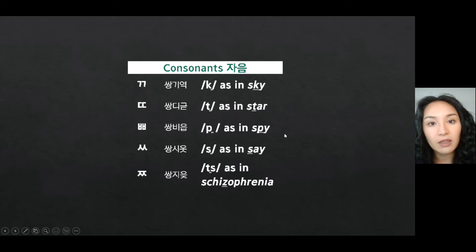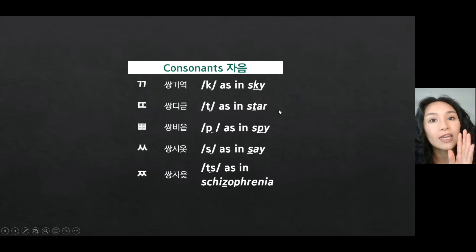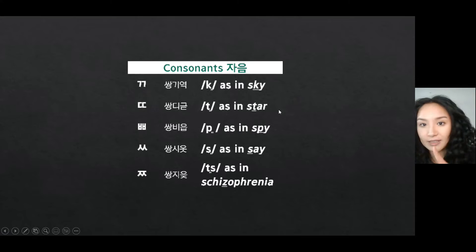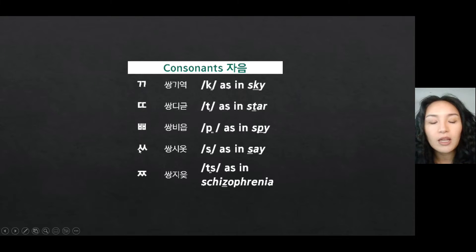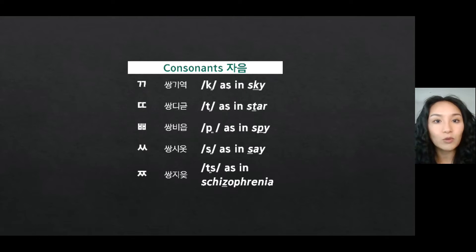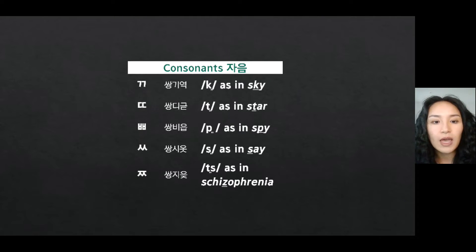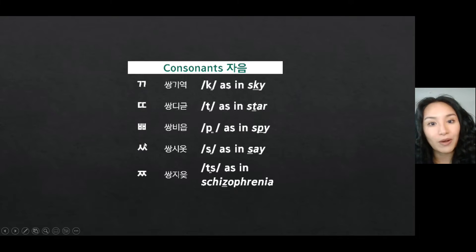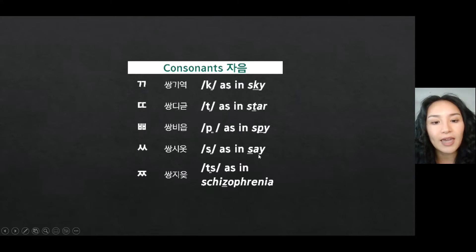Can you understand the phonological environment here? All the tensed consonants sound like they are located right after an S sound. The next one: the basic form sounded like S, as in 'swag' — a weaker S sound. However, the tensed version is a proper, stronger S, as in 'say.'